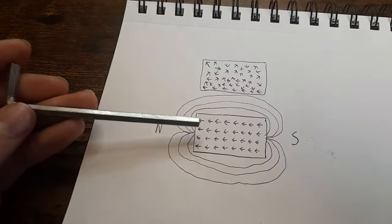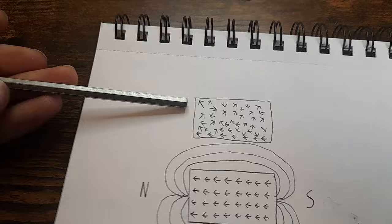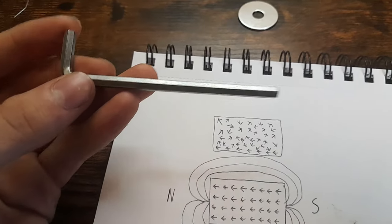Now that our Allen wrench is magnetized, we could actually demagnetize it again by hitting it with a hammer in the absence of the magnetic field.